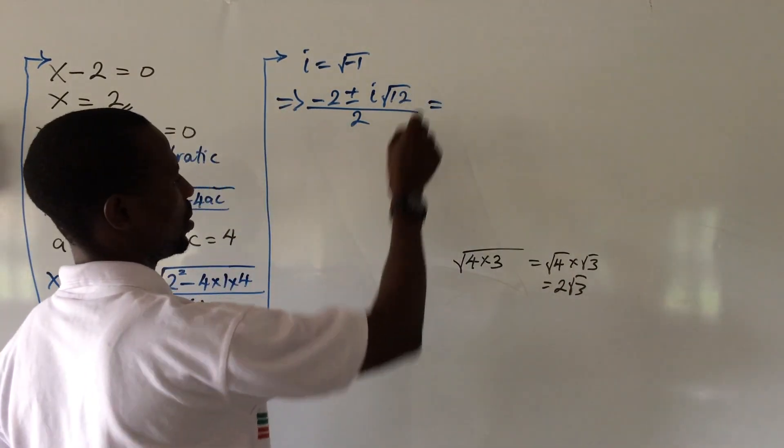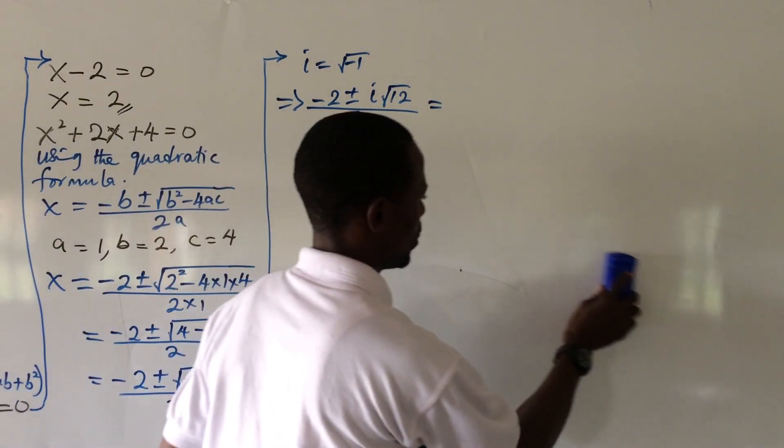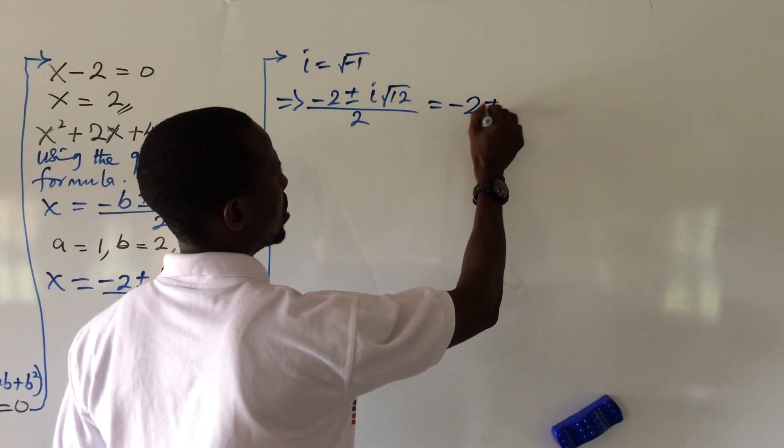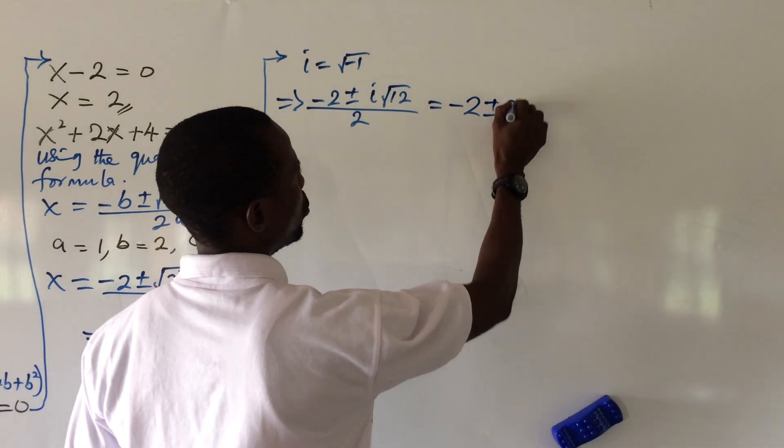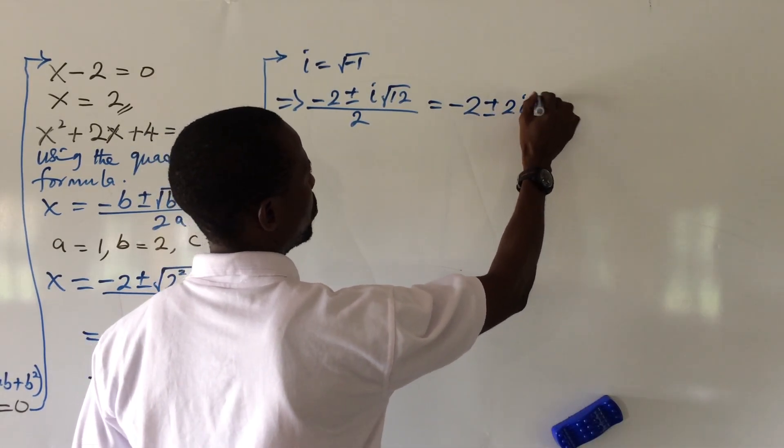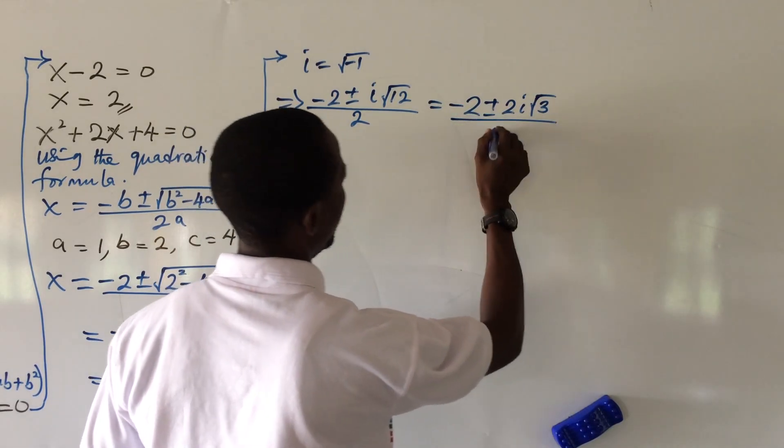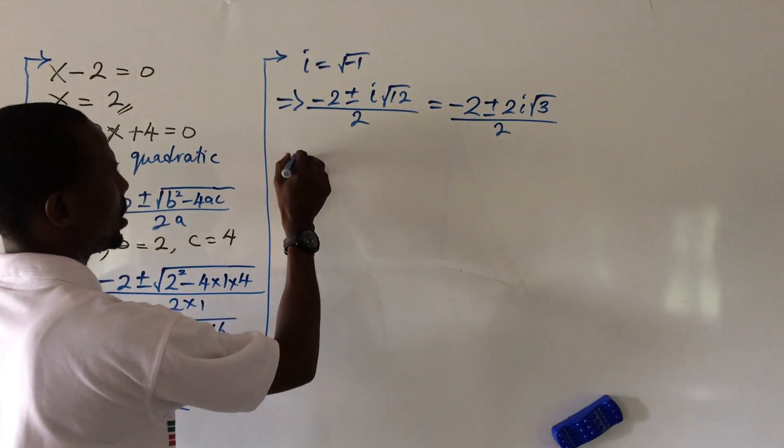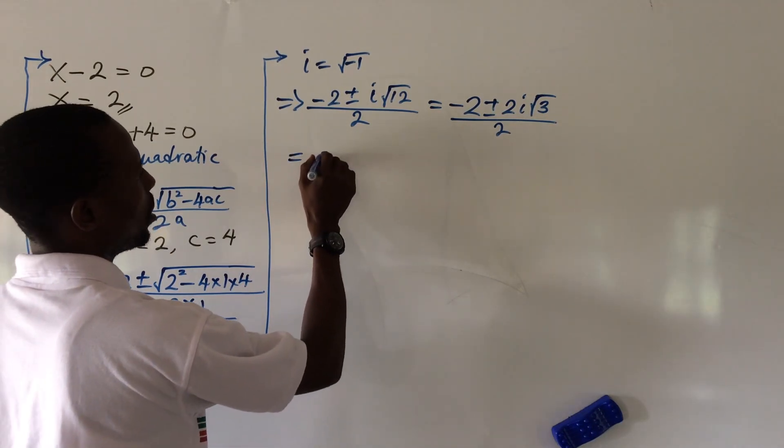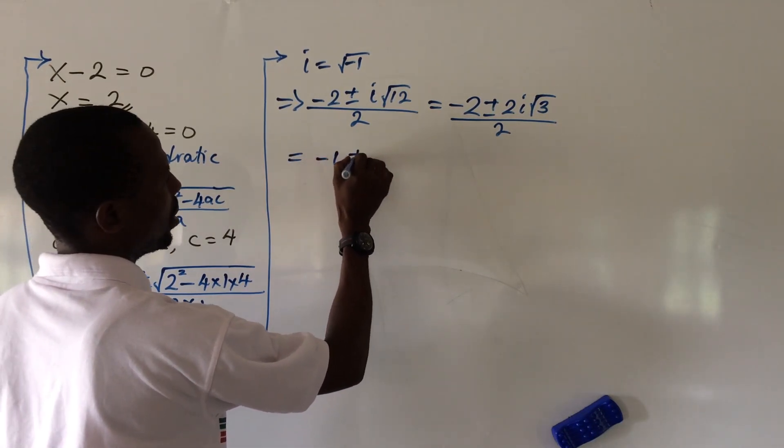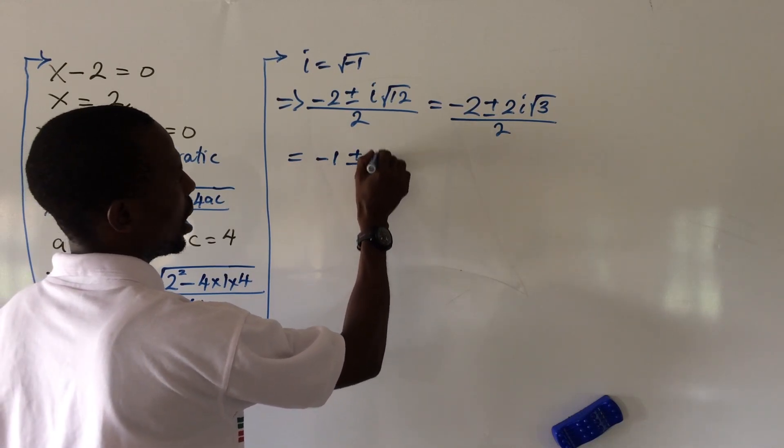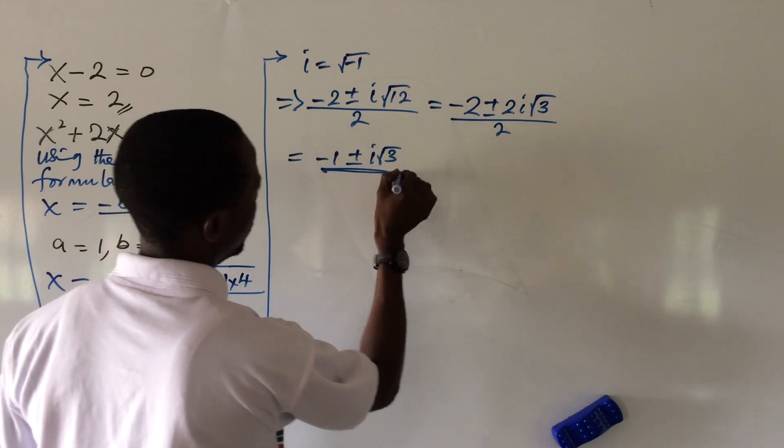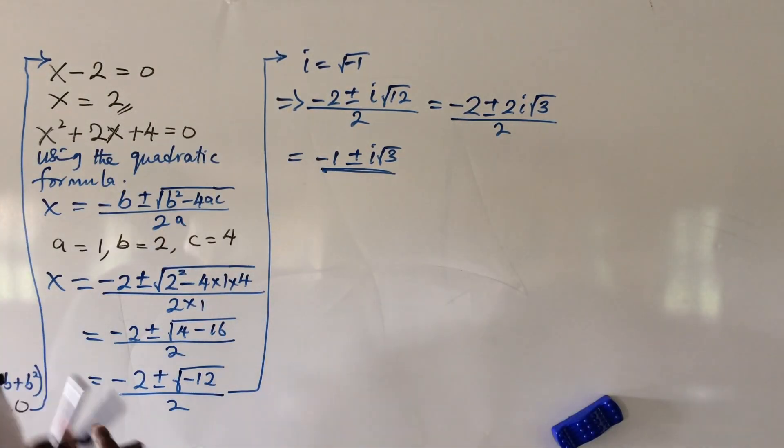From that. So let's put the whole of this into x. So x will now give us minus 2 plus minus 2i root 3 all over 2.